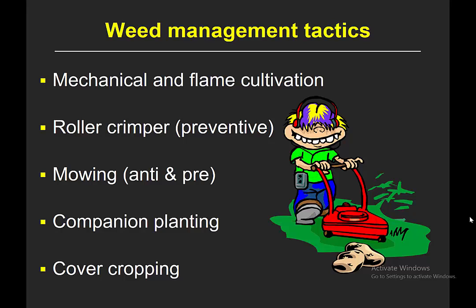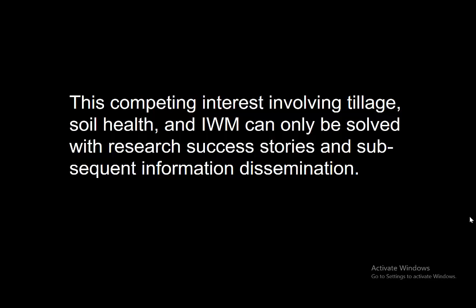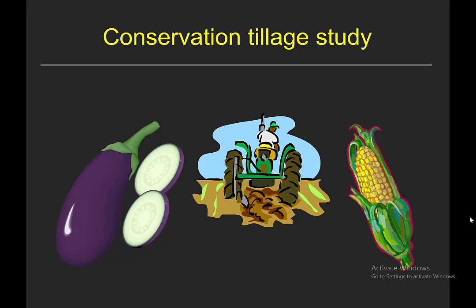Companion planting is another tactic — putting more plants together leaves fewer places for weeds to germinate, though it can make weed management more complex. Cover cropping is also an important tool. Given the competing interests involving tillage and integrated weed management, the only way to solve this problem is through research, success stories, and disseminating those stories to growers. With that, I'll switch over and talk about a conservation tillage study.